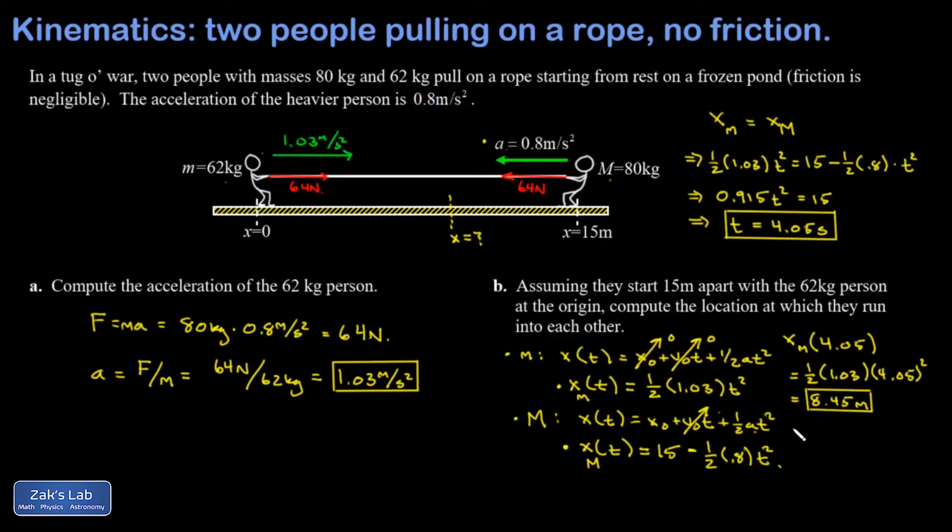Then I do the same thing with the heavier person. X big m evaluated at 4.05 seconds is 15 minus one half times 0.8 times 4.05 squared, and I get 8.44 meters right of the origin. That's a small discrepancy that can be attributed to rounding error in the problem. Our two final positions agree, so we can have a high degree of confidence we've done everything correctly in the problem.